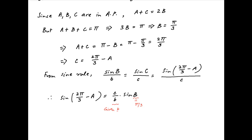We are also given that b upon c is equal to root 3 upon root 2. Therefore, c upon b can be replaced with root 2 upon root 3.